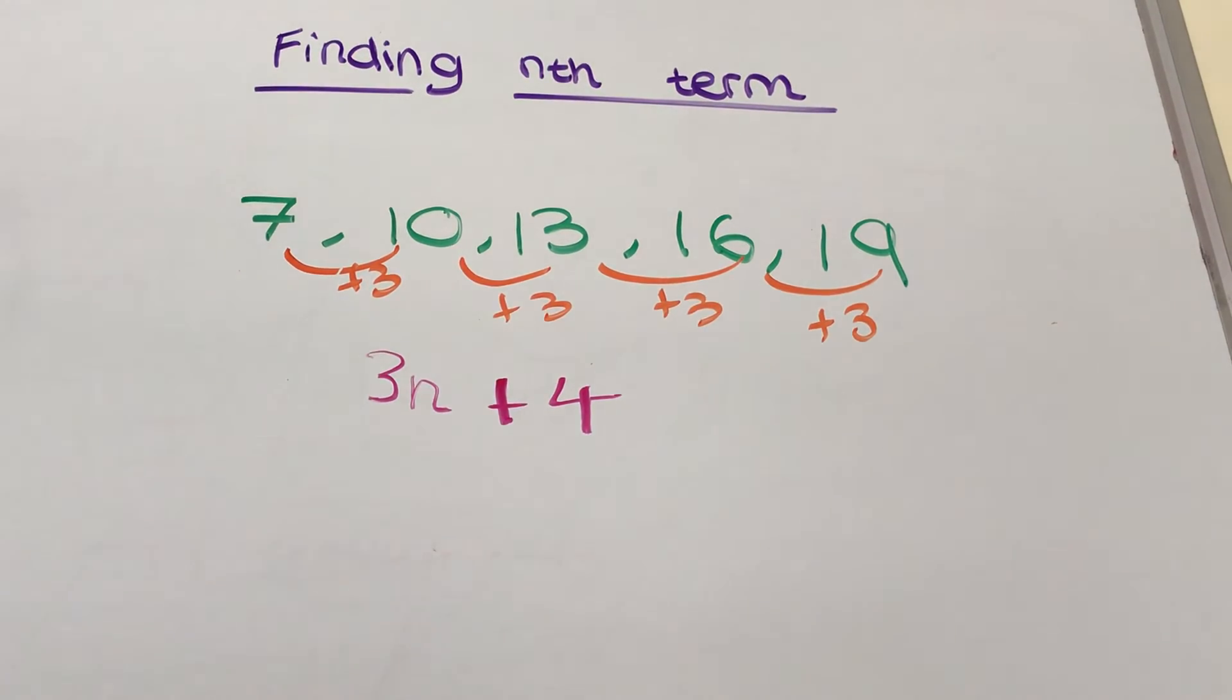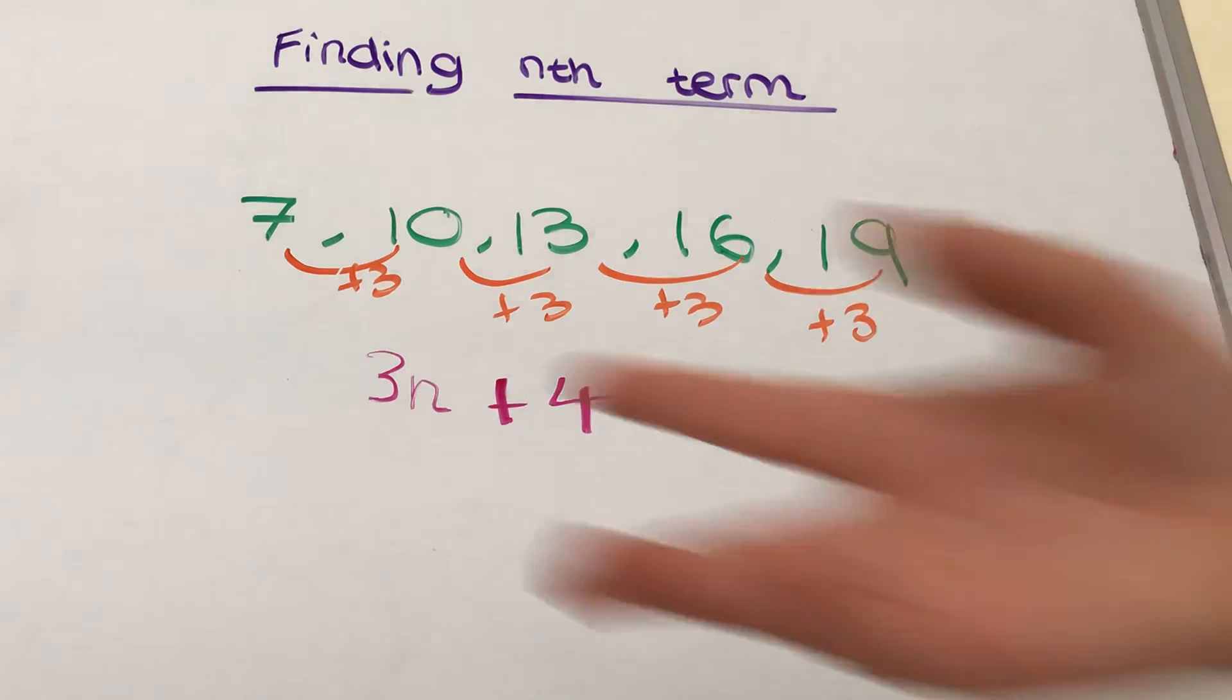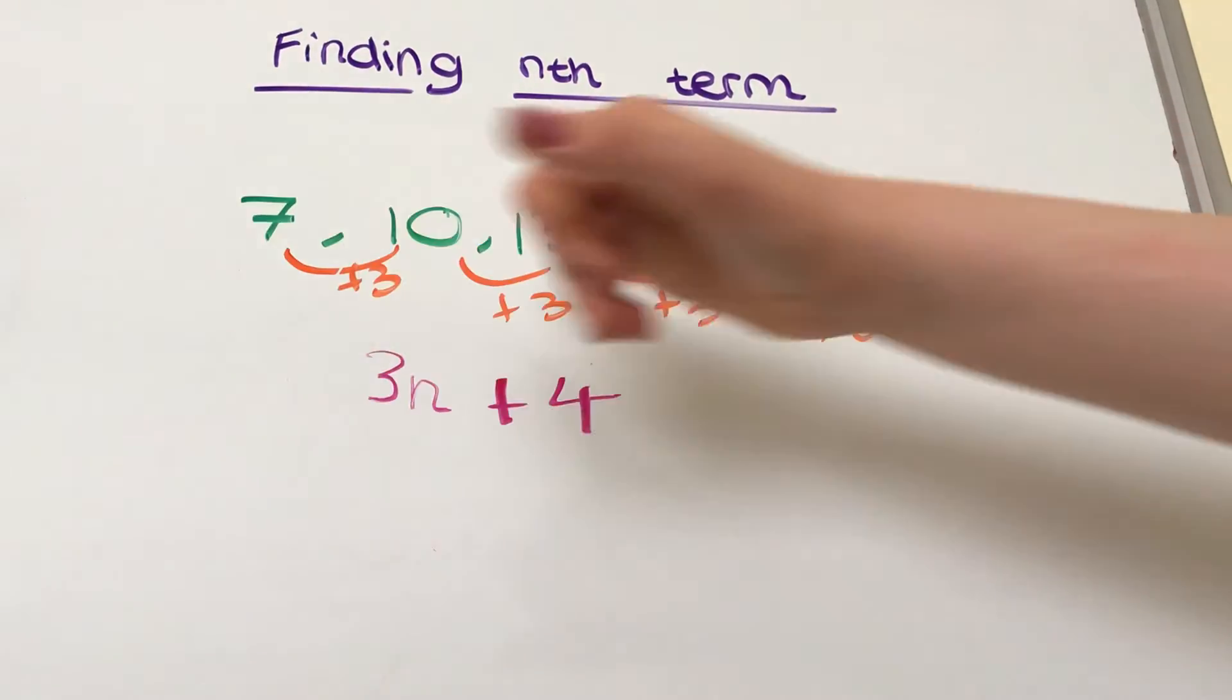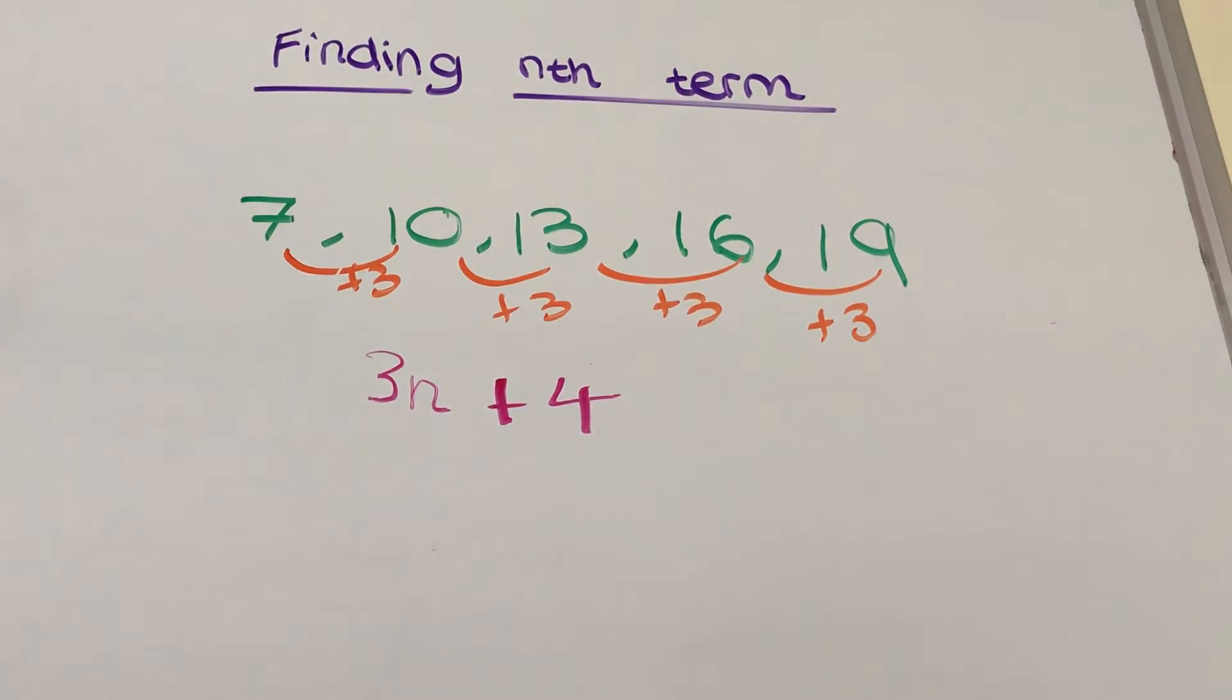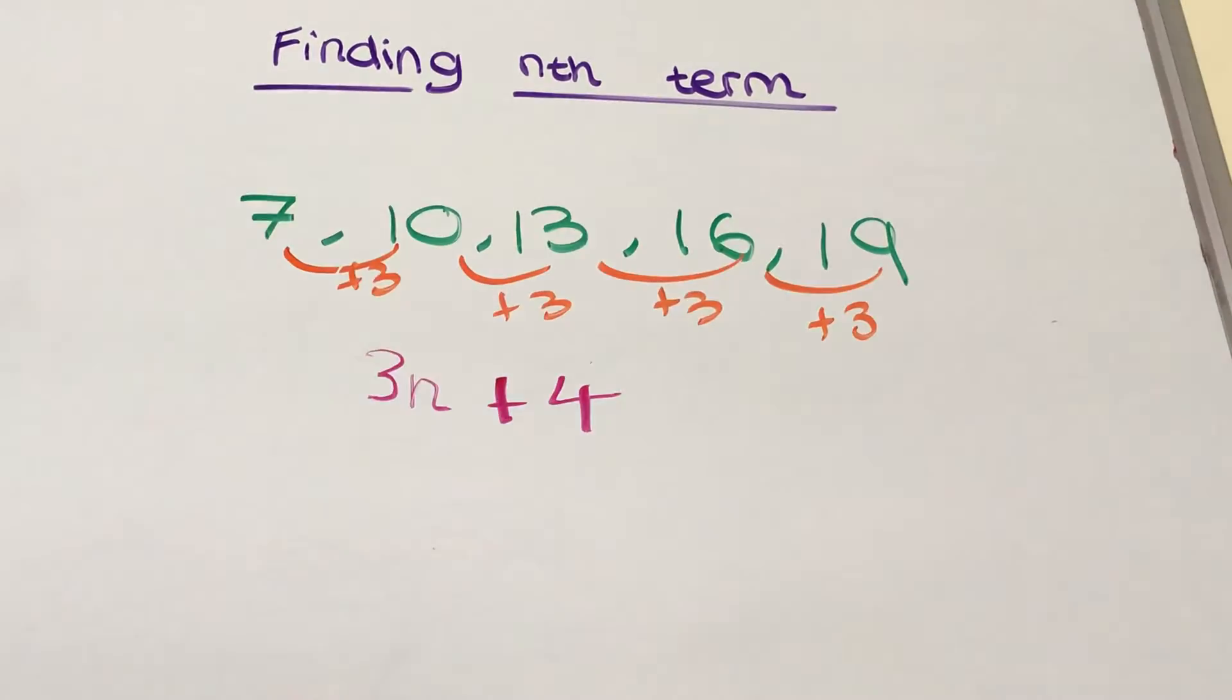And then our final part, which in this case is add 4. What we want to do is think how we go from the beginning of the 3 times table to the number we've got. So we're going up in 3's, we're adding 3's, which is very similar—well, it's the same as the 3 times table—except the 3 times table starts with 3, this part starts with 7.